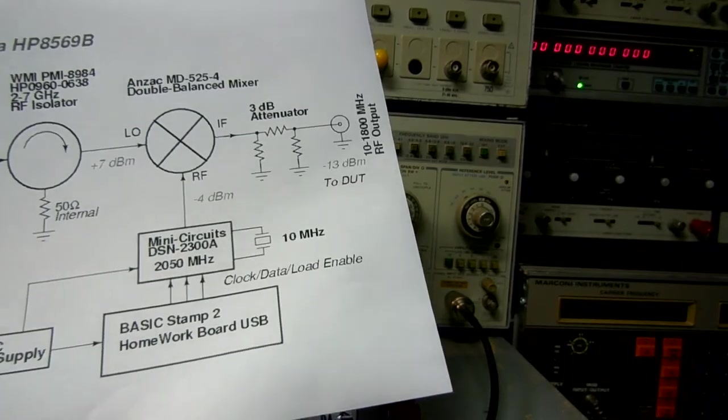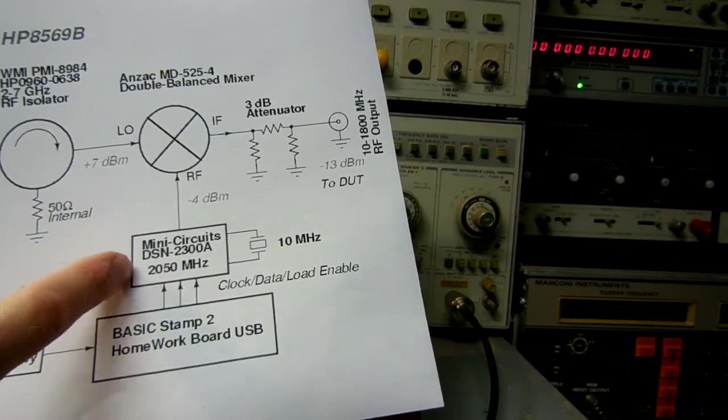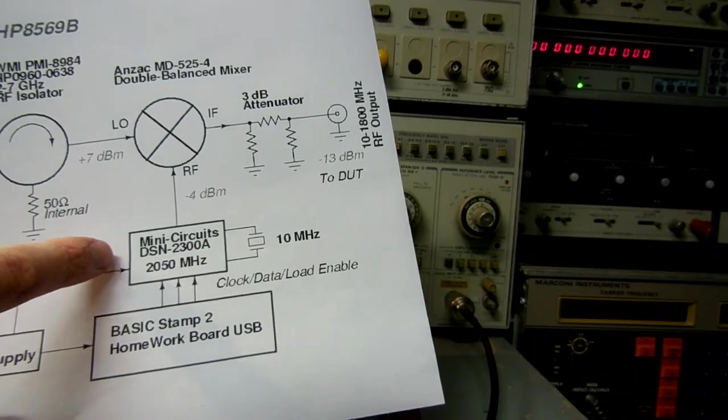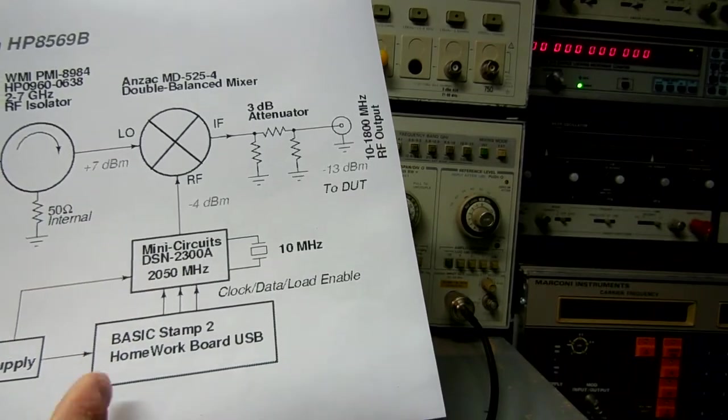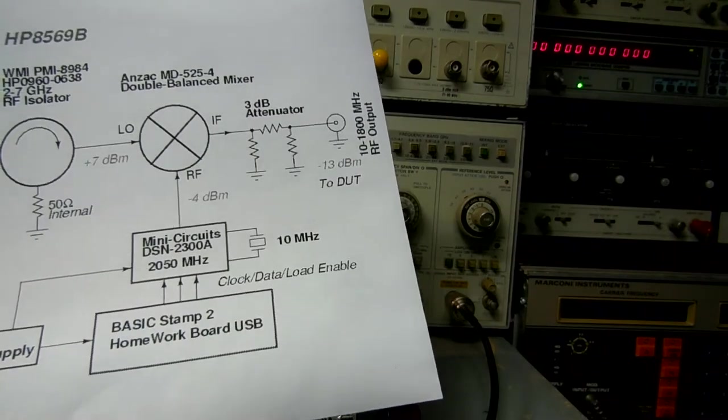The most complex thing is programming the oscillator. We're going to be using the Mini Circuits DSN2300A. I'm going to use a basic stamp to program the frequency.